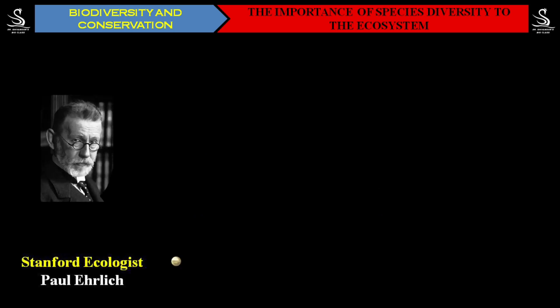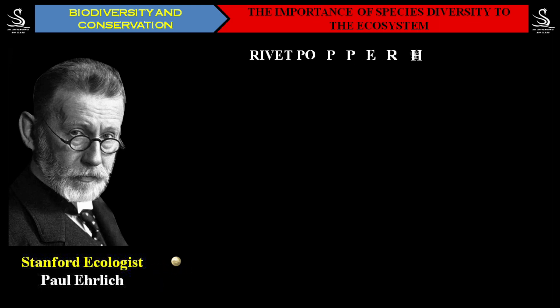One ecologist from Stanford, Paul Ehrlich, explained the importance of species diversity to the ecosystem in a very clear manner that even a common man can understand, by proposing the Rivet Popper Hypothesis. Let us understand what this hypothesis is all about.